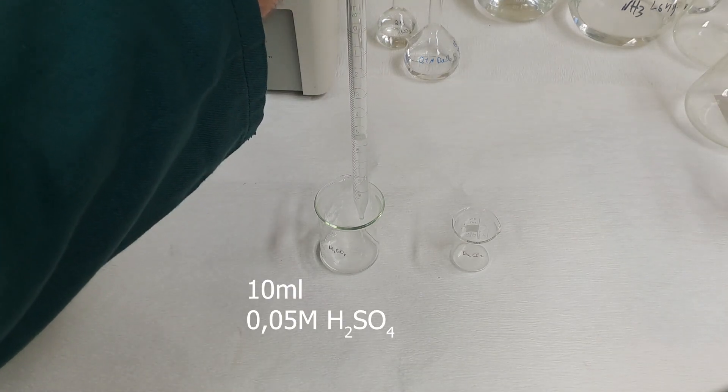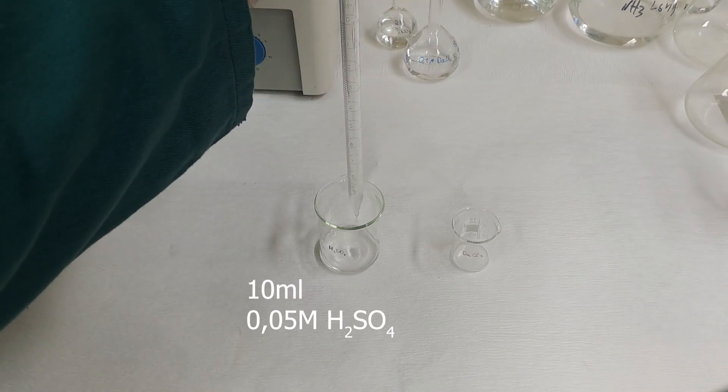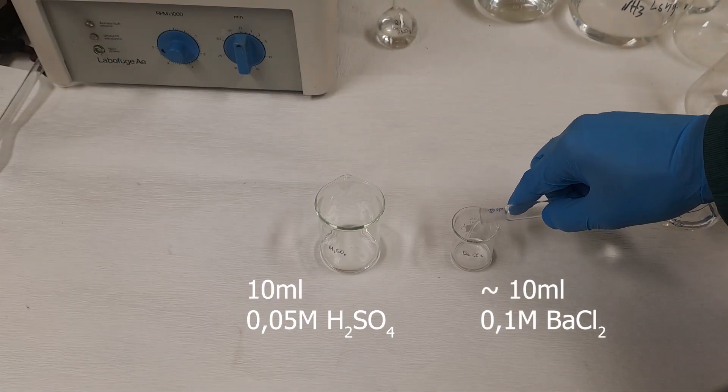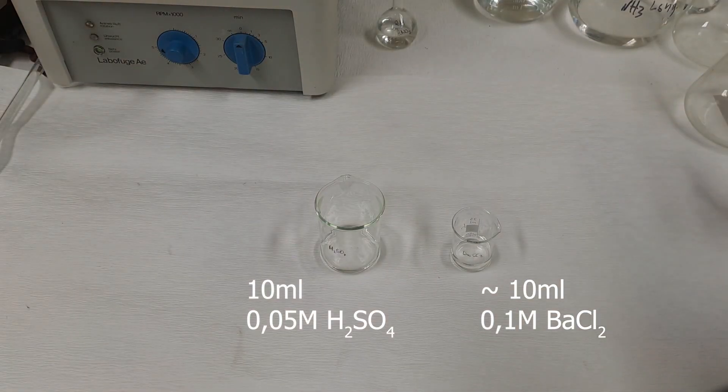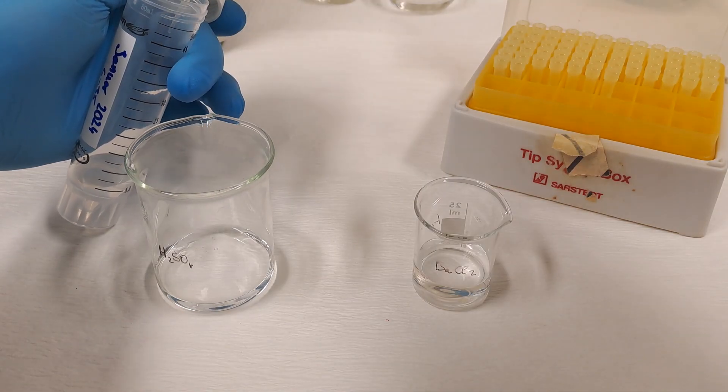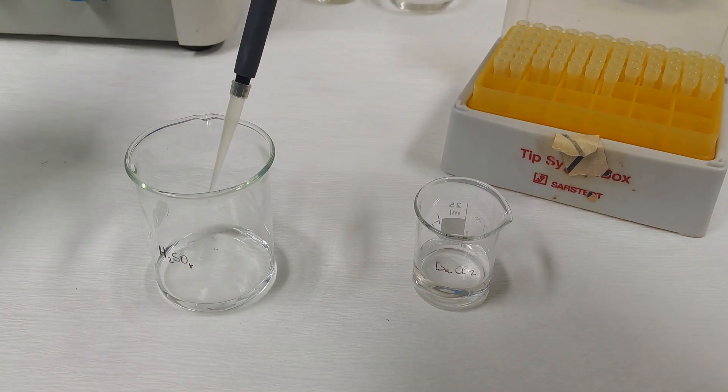Pour 10 milliliters of 0.5 molar sulfuric acid into a large beaker. The volume of barium chloride should be half of that for complete precipitation, but a little more won't hurt. The assisting person will add 100 microliters of the sulfur-35 solution to the sulfuric acid.